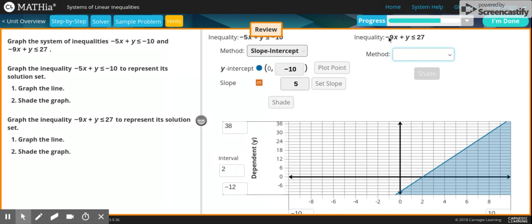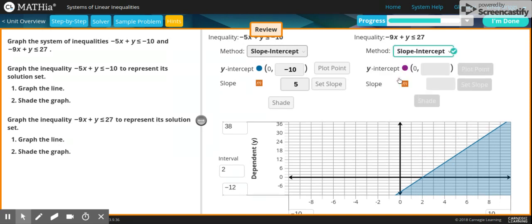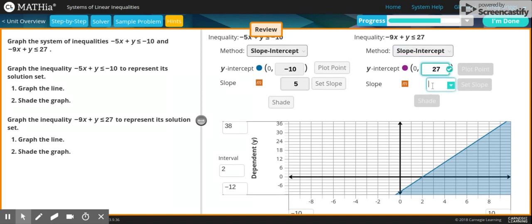After that, you move on to this equation, which is negative 9x plus y is greater than or equal to 27. Again, I'm going to use slope-intercept. Because this one was negative 10, that means it's going to be 27 over here. Your slope would be, instead of being negative 9x, it's going to be positive 9.